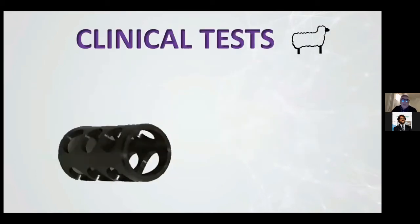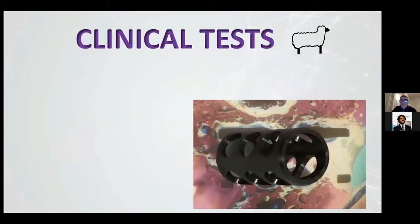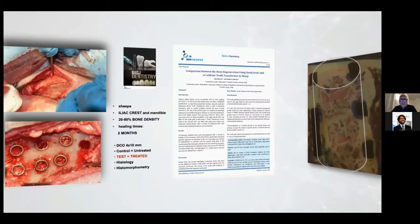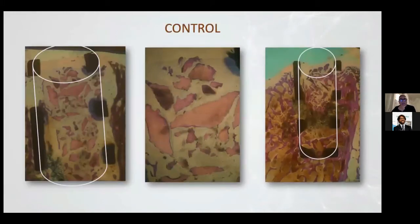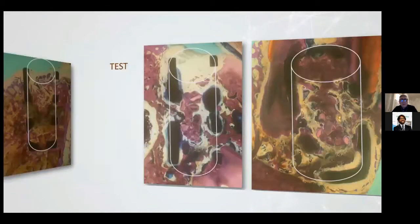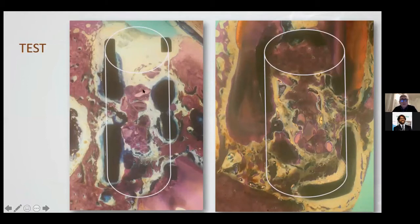We started with the clinical test. We made a test with sheep and placed a cage inside the mandible. We inserted treated dentine in some cages and untreated dentine in others as control. After two months, it's possible to observe that with untreated dentine there are granules without new bone surrounding them. But with treated dentine, there is a big quantity of bone surrounding the granules.